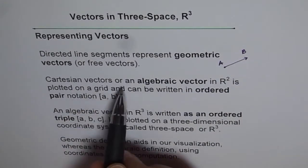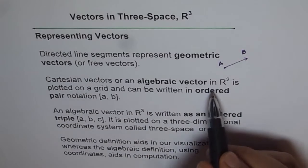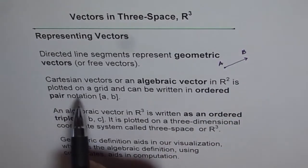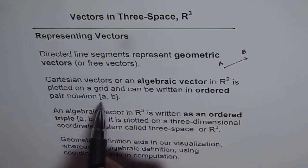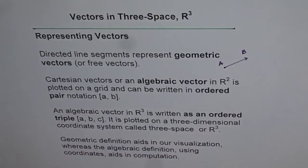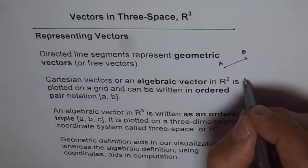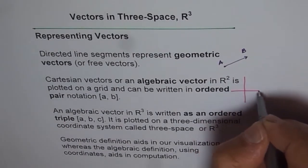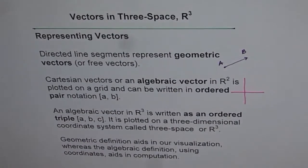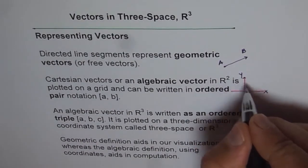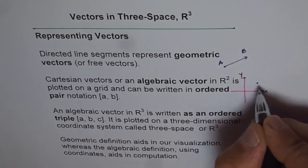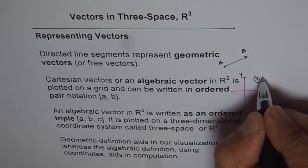Cartesian vectors or an algebraic vector in R² is plotted on a grid and can be written in ordered pair notation, like within square brackets [a, b]. In R², we had a coordinate plane which has two axes, X and Y.